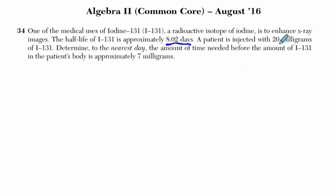Then they're going to give us some mass measurement, 20 milligrams of I-131. The determinant here is day. You always want to pay attention to how they're measuring things here in days, which is nice because we're already given units of days here. The amount of time needed before the amount of I-131 in the patient's body is approximately 7 milligrams.